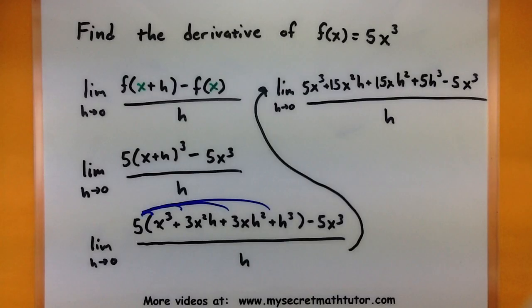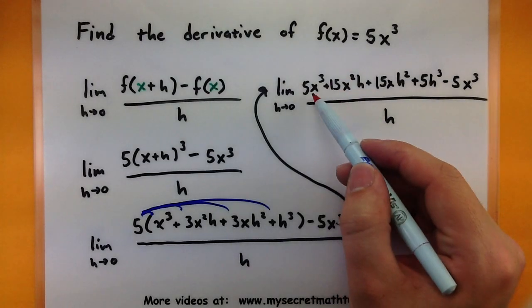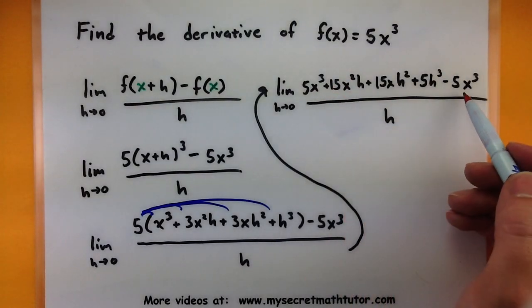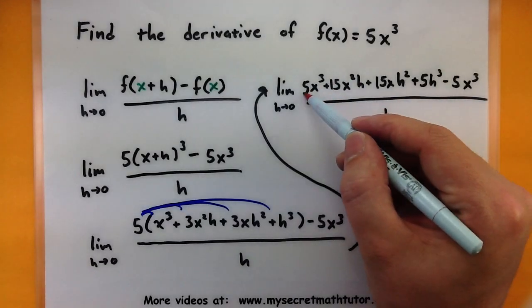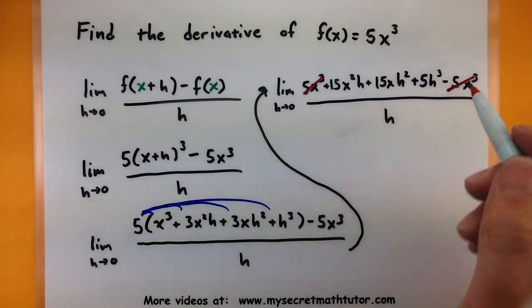Fortunately it looks like there's a little bit that we can cancel. So I have this 5x cubed here and a minus 5x cubed on the back. So both those are gone.